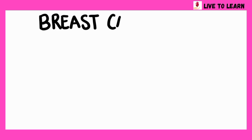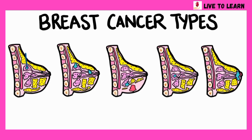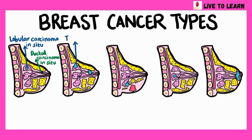The most common sites for breast cancer are the lobules and ducts. Lobular and ductal carcinomas could either be in situ, meaning they are confined to the lobules and milk ducts and don't spread beyond that, or these carcinomas could be invasive, meaning they spread to the nearby breast tissue.